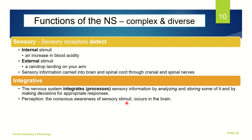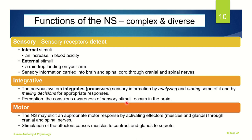The third important function, as you can probably guess, is motor. The nervous system can elicit an appropriate motor response by activating effectors — such as muscles or glands — through the help of cranial and spinal nerves. The stimulation of these effectors causes an appropriate response; for example, the muscles can contract or glands can secrete.